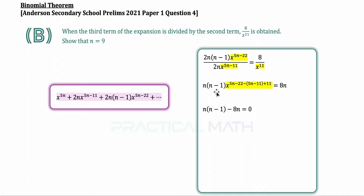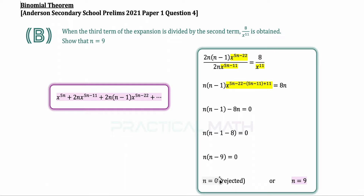We have n times (n−1) minus 8n equals 0. Factoring out n gives n times (n−1−8) equals 0, which simplifies to n times (n−9) equals 0. So n equals 0 or n equals 9. Since n equals 0 would mean no binomial expansion exists, we reject n equals 0. Therefore n equals 9, as required.